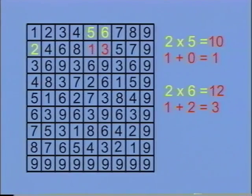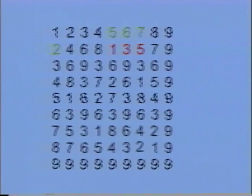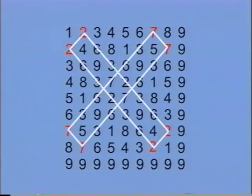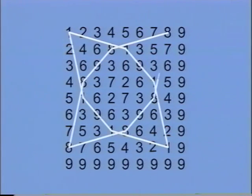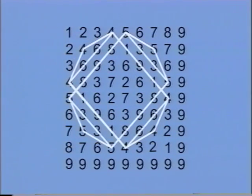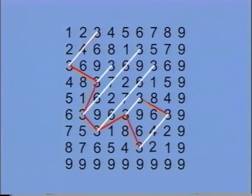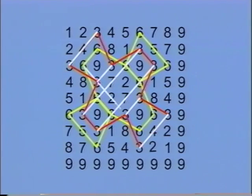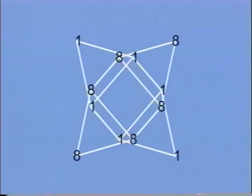The Vedic square is based on the multiplication square. Numbers one through nine on the horizontal and vertical axis are multiplied together and reduced to single digit numbers. This was a primary method for deriving patterns by connecting like numbers. Geometrical forms based on mathematical principles created symbols recognized and used by man in most cultures.